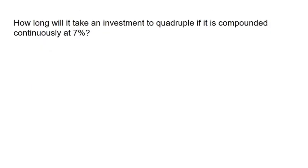So how long would it take an investment to quadruple if it's compounded continuously at 7%? So we have this equation. And so what we know is if I have some principal, our rate is 7 now. We're still trying to solve for t, but I don't want to know when it doubles. I want to know when it quadruples. In other words, 4P. So let's just solve this equation. I'm going to divide by P on each side, which is going to leave us with 4 equals e to the .07t.